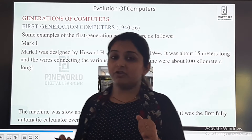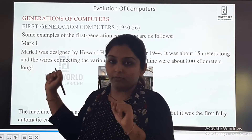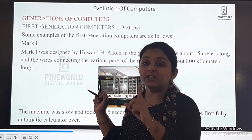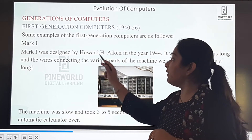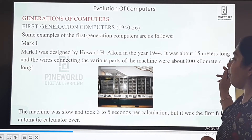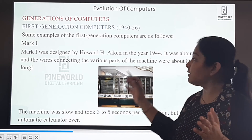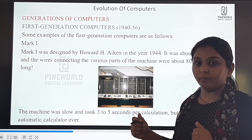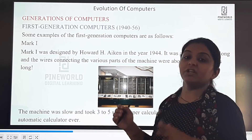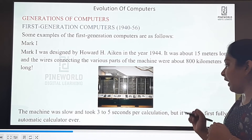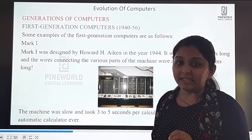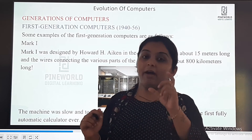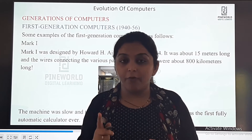Mark 1 was designed by Howard H. Aiken in the year 1944. Please remember this. It was about 15 meters long, and the wires connecting the various parts of the machine were about 800 kilometers long — you can see this in the picture. The machine was slow and took 3 to 5 seconds per calculation. But it was the first fully automatic calculator ever. You have to remember: the first fully automatic calculator was Mark 1.